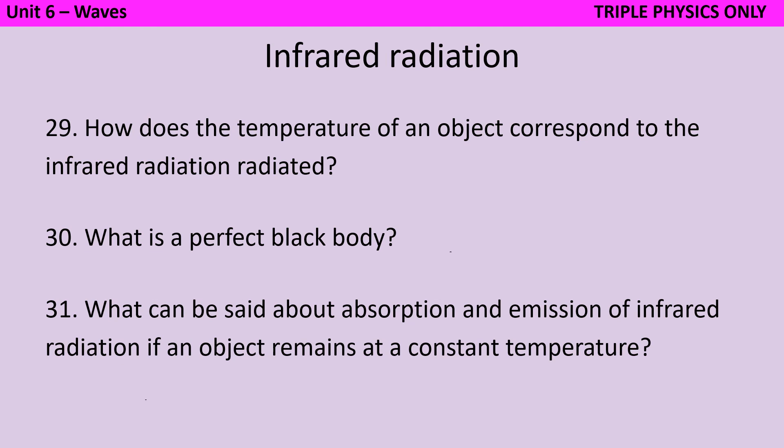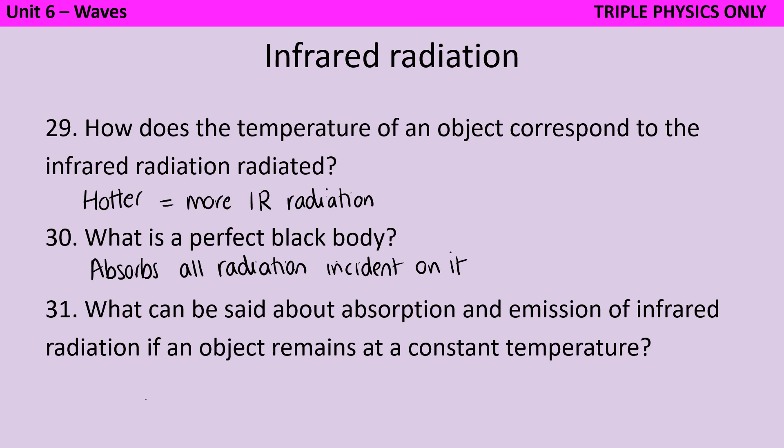The hotter an object is, the more infrared radiation it will be radiating. A perfect black body is something that absorbs all of the radiation that is incident on it. In other words, all of the radiation that touches it. So none of it is being reflected and none of it is being transmitted. It's all just being absorbed. If an object is at a constant temperature, this tells us that the infrared radiation that's being absorbed and the infrared radiation that's being emitted must be equal to one another.